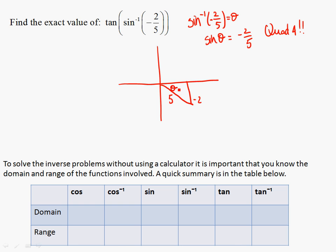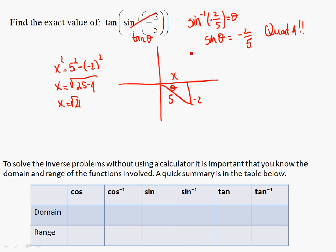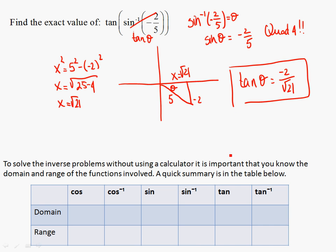Now, what am I supposed to find? We replace this with the tangent of the angle. What's the tangent of this angle? I need to find the missing side, because I need opposite over adjacent. So x squared equals 5 squared minus negative 2 squared. So x is the square root of 25 minus 4, which is the square root of 21. The tangent is negative because it's in quadrant 4. This is the reason you want to make sure you draw it in the right quadrant — depending on the quadrant you're in, the signs will change.